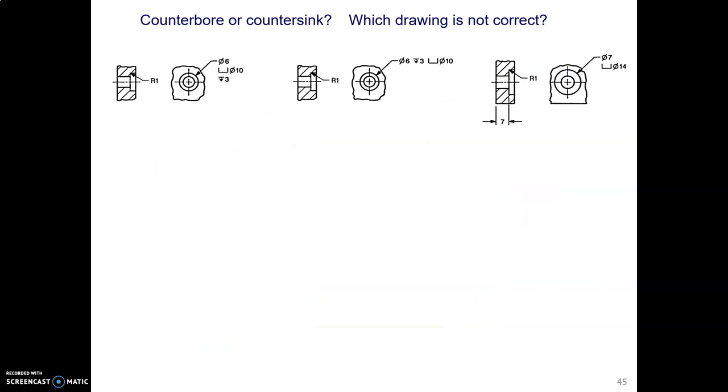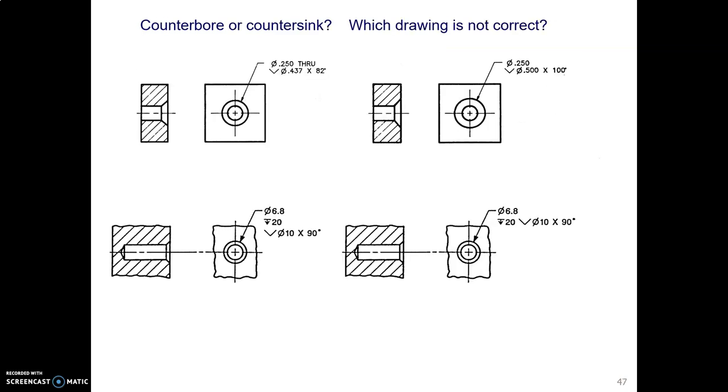Then counterbores and countersinks. What have we got here? We have counterbores. And which one - it might take you a minute to stare at these. Which one is not correct? It turns out it's the one in the middle. We don't give the depth first when we're talking about the counterbore. We give the diameter of the counterbore, and then we tell them - well, like on the left. We give the diameter of the counterbore, and then we tell them what depth to make it. That's kind of like the order in which you would make this hole. You pick up the 10 millimeter boring tool, and then you bore a hole, and then you make it three millimeters deep.